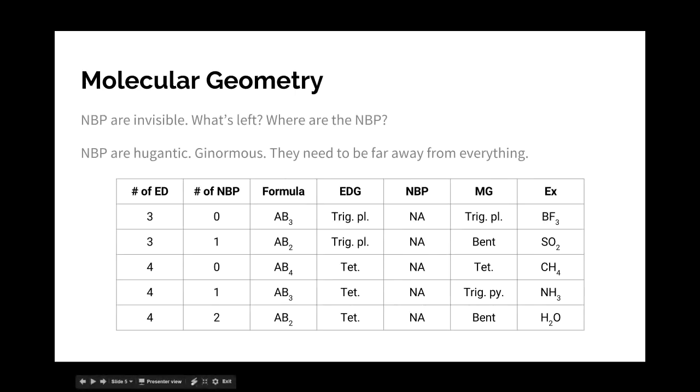This left-in column is the number of electron domains. So we'll be starting with three and working our way up to six electron domains. Then we have the number of non-bonding pairs, and then sort of a generic molecular formula. Then we have the electron domain geometry. So if you have three electron domains, it's trigonal planar. If you have four electron domains, it's tetrahedral. Then this column here, NBP,